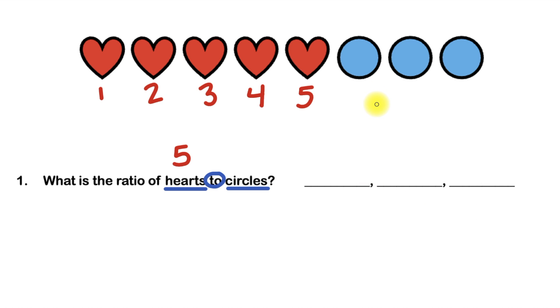And how many circles do you see in our diagram? I see 1, 2, 3. So the number of circles is 3. That makes our ratio of hearts to circles 5 to 3.